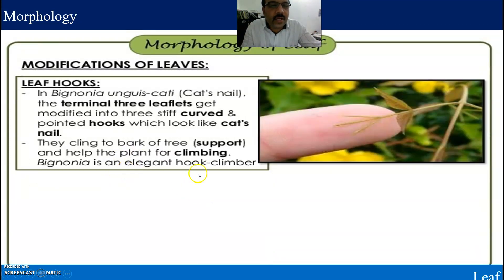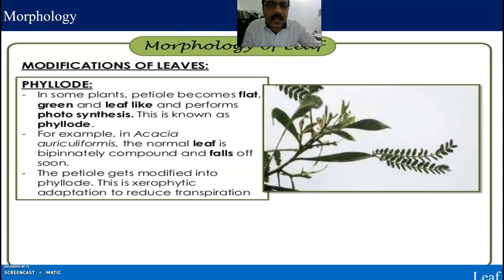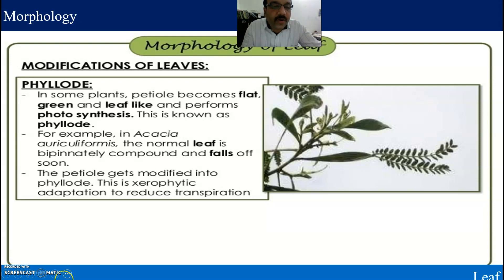Another modification is the leaf hook. Then there is the phyllode. In some plants, the petiole becomes flat, green, and leaf-like and performs photosynthesis. This is known as a phyllode. For example, in Acacia auriculiformis, the normal leaf is bipinnately compound and falls off soon, and the petiole gets modified into a phyllode. This is a xerophytic adaptation to reduce transpiration.